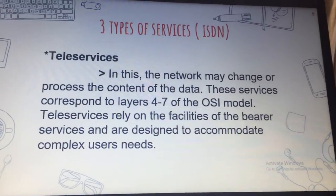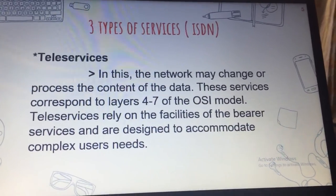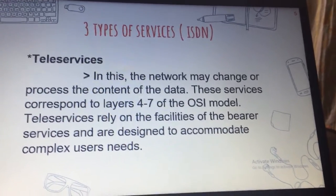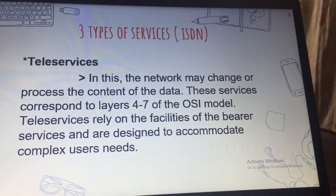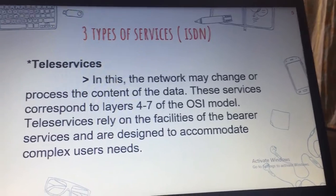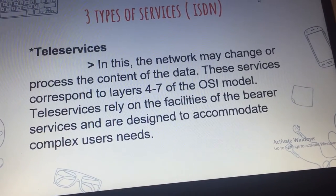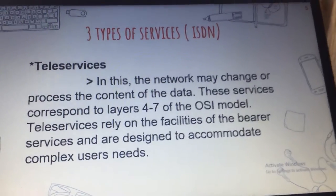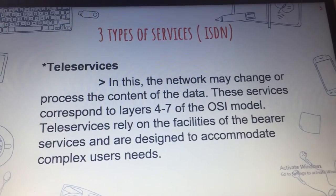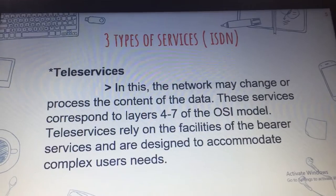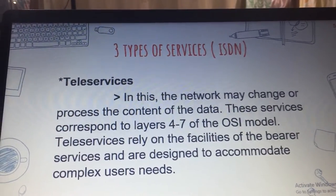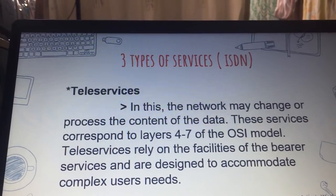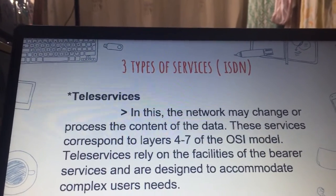Next is teleservices. In this, the network may change or process the content of the data. These services correspond to layers 4 to 7 of the OSI model. Teleservices rely on the facilities of the bearer services and are designed to accommodate complex user needs. The users need not be aware of the details of the process. These services include telephony, teletext, telefax, videotext, telex, and teleconferencing. Though ISDN defines these services by name, they have not yet become standards.